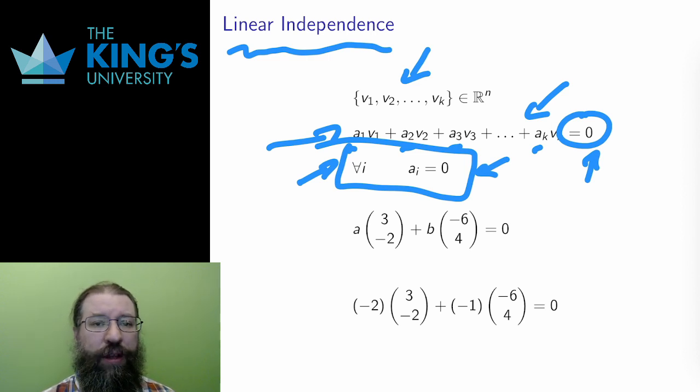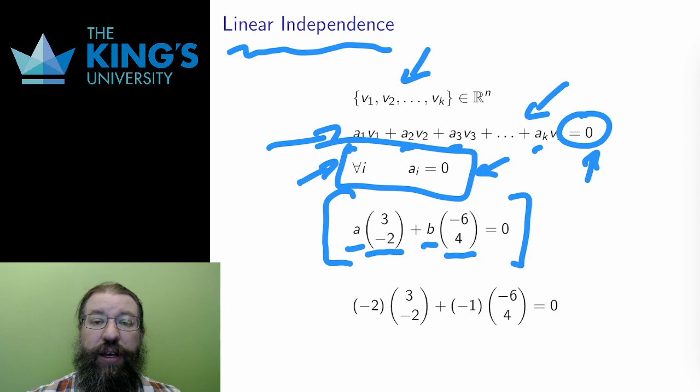Consider two vectors, (3, -2) and (-6, 4). A linear combination of these is a times (3, -2) plus b times (-6, 4) for some numbers a and b. If I am careful, I can choose a equals -2 and b equals -1. Then the first coordinate becomes -6 plus 6 equals 0, and the second coordinate becomes 4 minus 4, also equals 0. These are non-zero choices for the constants a and b that lead to the zero vector in a linear combination for these two. This is a non-trivial solution. Since it is a non-trivial solution, by the definition, these two vectors are linearly dependent, not independent.